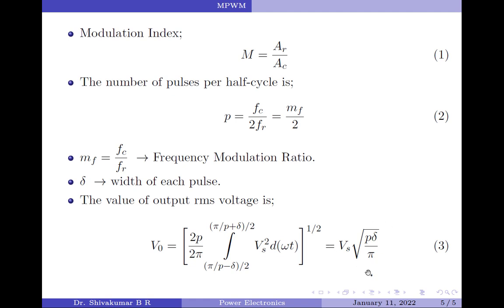When comparing the output RMS voltages of Single Pulse Width Modulation and Multiple Pulse Width Modulation, the only difference is the presence of the factor P. Single Pulse Width Modulation produces an output voltage of Vs times the square root of delta over pi, whereas Multiple Pulse Width Modulation produces an output of Vs times the square root of P·delta over pi. That concludes the discussion on Multiple Pulse Width Modulation control for the output voltage of a single-phase full bridge inverter.